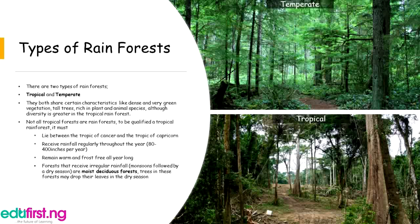Both share certain characteristics like dense and very green vegetation, tall trees, and richness in plant and animal species, although diversity is greater in a tropical rainforest. Not all tropical forests are rainforests. To qualify as a tropical rainforest, it must lie between the Tropic of Cancer and the Tropic of Capricorn, receive rainfall regularly throughout the year (80 to 400 inches per year), and remain warm and frost-free all year long.